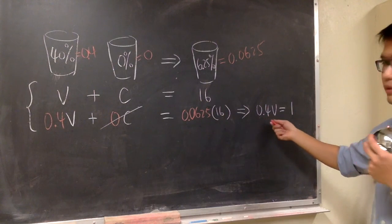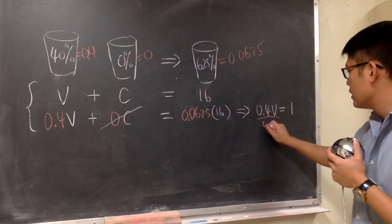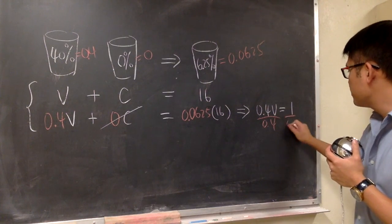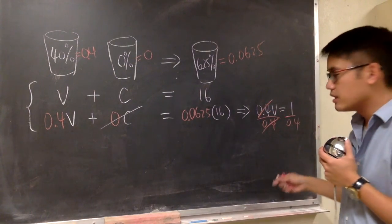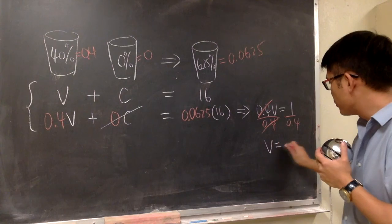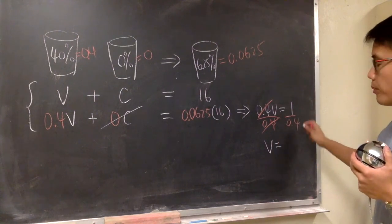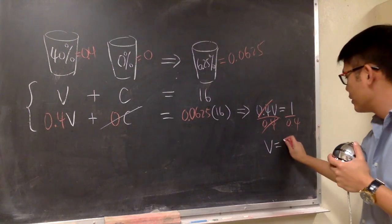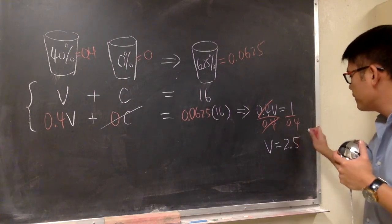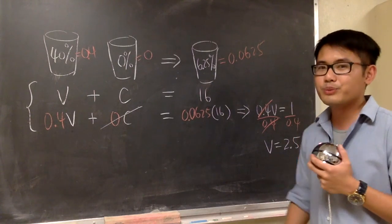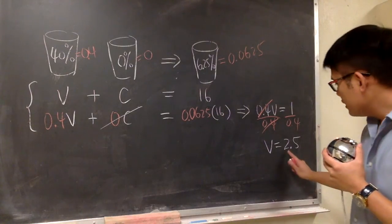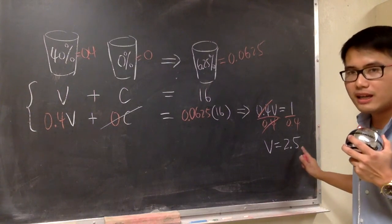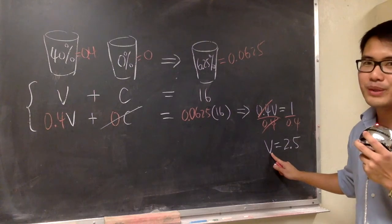And then we are going to solve for V. Let's divide 0.4 on both sides. Cancel, cancel. That's very nice. And we get V is equal to 1 over 0.4, which is 2.5. And what does the 2.5 represent? This represents 2.5 ounces of vodka that we need to use.